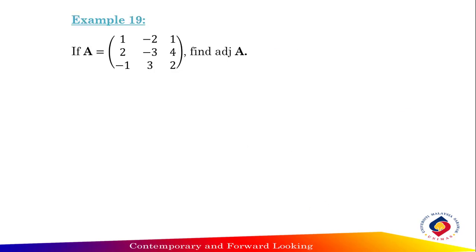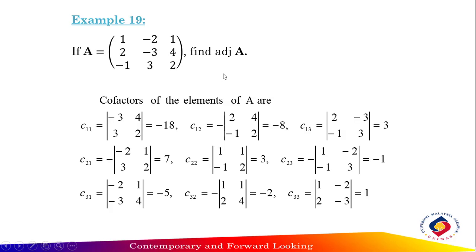Let's try Example 19. Given matrix A equal to [1, -2, 1; 2, -3, 4; -1, 3, 2], find adjoint A. First step: find the cofactors of the elements of matrix A. We will start with C11. To calculate C11, imagine deleting the first row and first column.